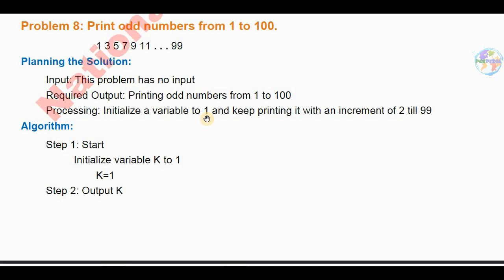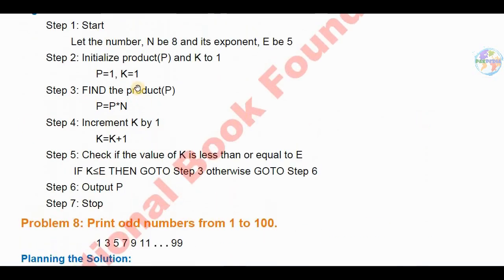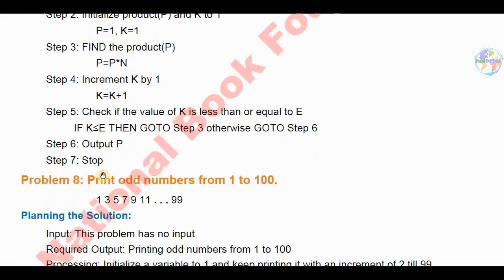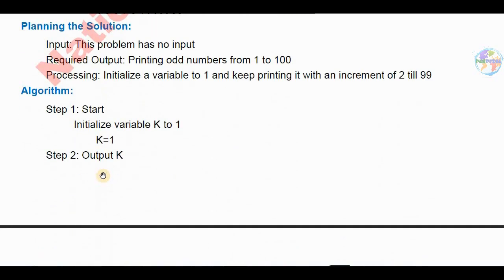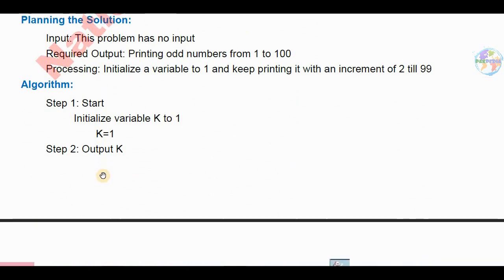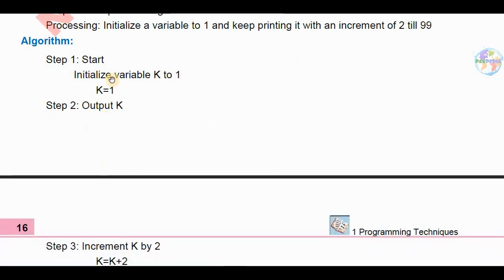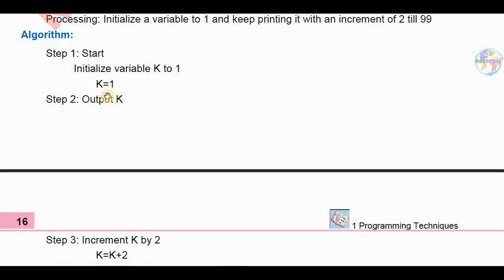This is the main logic of this algorithm. We will start with steps: start with 1, then add 2, and print it. We will print until we reach 99. We will compare the values — if you remember, we had P and K values. We will increment K and then check whether it is smaller than the end value or not. Algorithm, step number 1: Start. We have initialization — if you assign a variable its first value, it's called initialization. Initialize K to 1. After that, output K means you are printing its value.